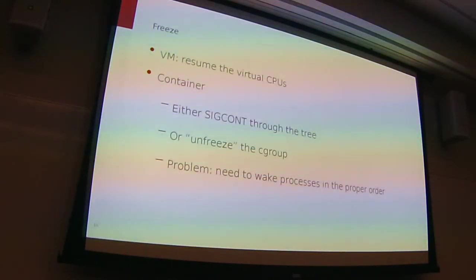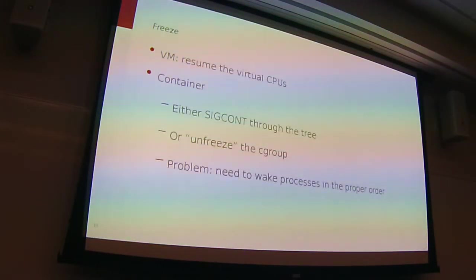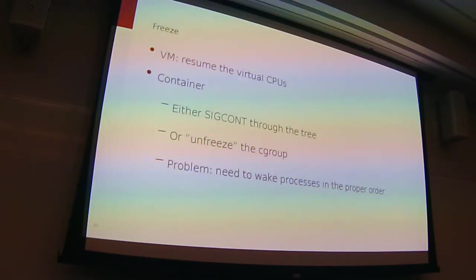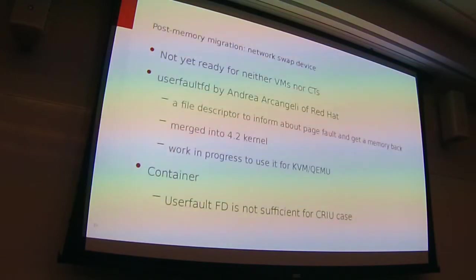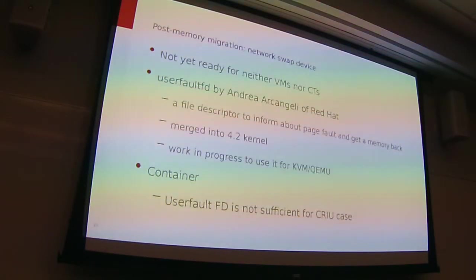For a VM, you just let the virtual CPUs run — you resume them. For a container, it's similar: you either send SIGCONT to the processes to keep running, or you use the freezer cgroup and say unfreeze. If you're using SIGCONT, you need to be careful about the order in which you unfreeze the processes, because if you get it wrong there might be unwanted side effects. Finally, if you implement post-copy memory migration — the network swap — this technology is still not available in upstream Linux. It's still a work in progress for both VMs and containers. For VMs, they just recently merged the so-called userfaultfd, which is a way to fulfill the page fault handler from a user space process.